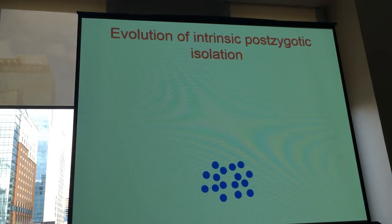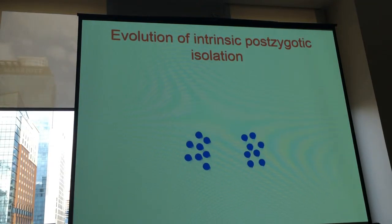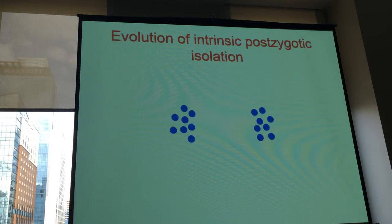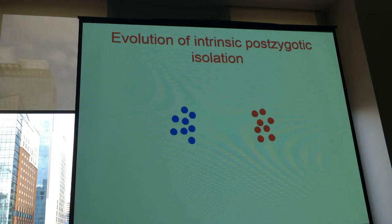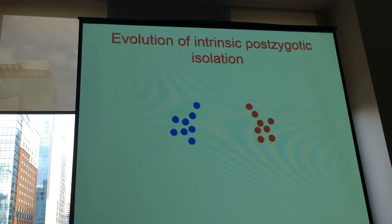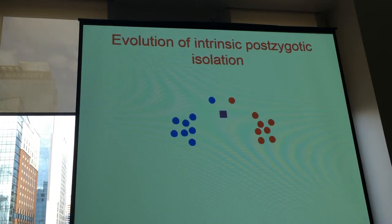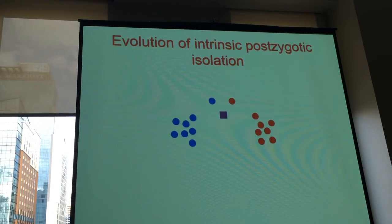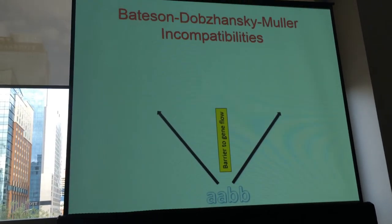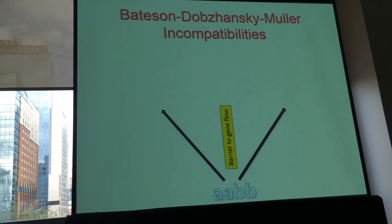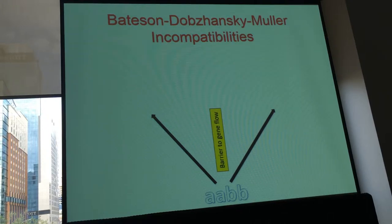These incompatibilities lead to intrinsic postzygotic isolation. This happens when a population gets split into two and gene flow stops or becomes very low, to the point that the populations diverge, and given enough time if they ever come back together and mate, their offspring has problems and is either sterile or inviable. This sterility and inviability is usually caused by Bateson-Dobzhansky-Müller incompatibilities — epistatic interactions between two or more loci.